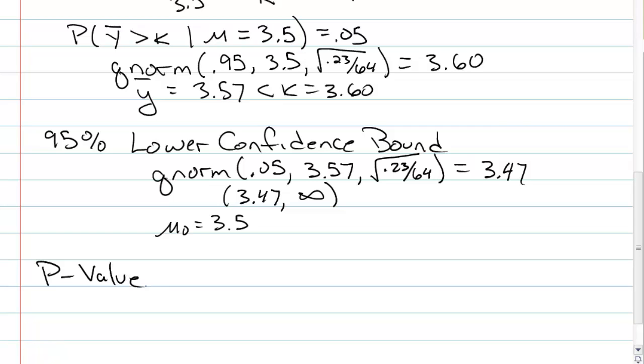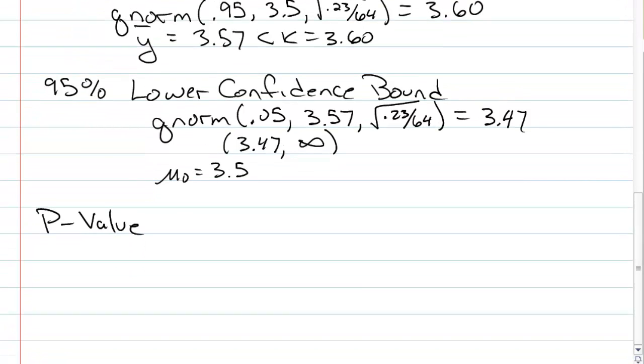Last idea is p-value. Using definition 2, the p-value is, given that the null is true, it's the probability of getting data as extreme or more extreme. Our data was a sample mean of 3.57, and that's given that the null is true. In other words, we're looking at the probability that we get data as extreme or more extreme. So I'm using a lowercase y-bar given the null is true. And we're going to calculate that. That's our p-value.